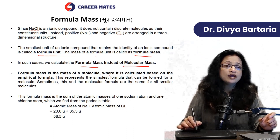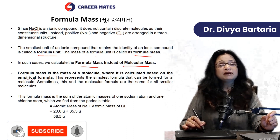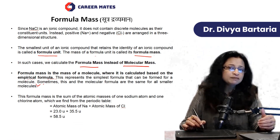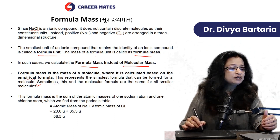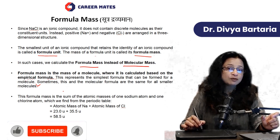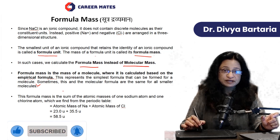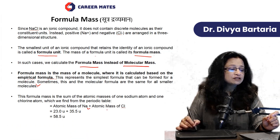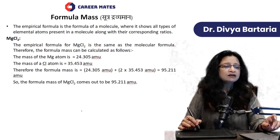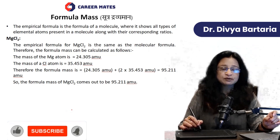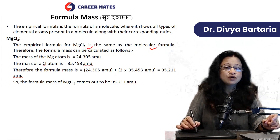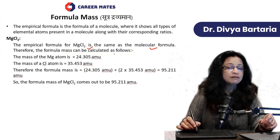Formula mass is the mass of a molecule calculated based on the empirical formula. The empirical formula represents the simplest formula that can be formed for a molecule. For magnesium chloride, the empirical formula and molecular formula are the same — MgCl2 cannot be simplified further, so this is both the empirical formula and the molecular formula.